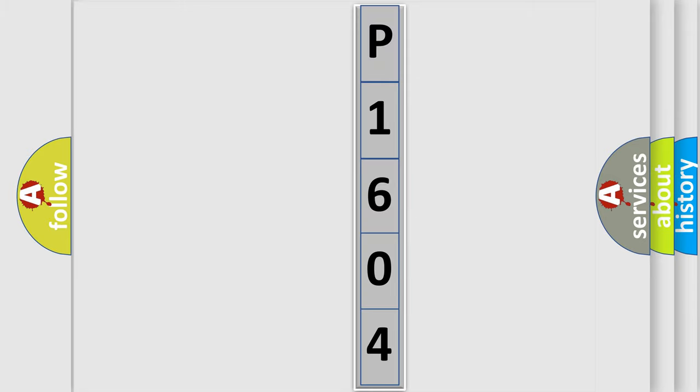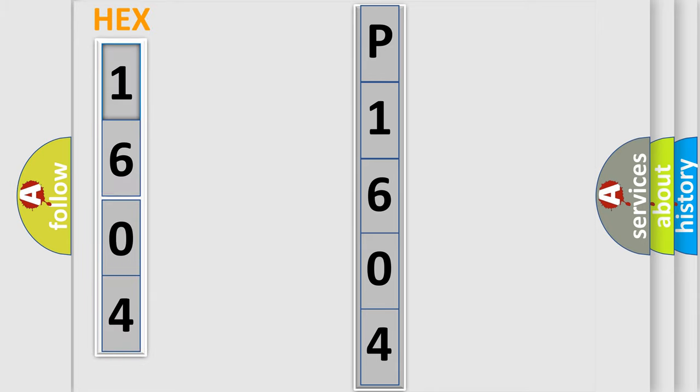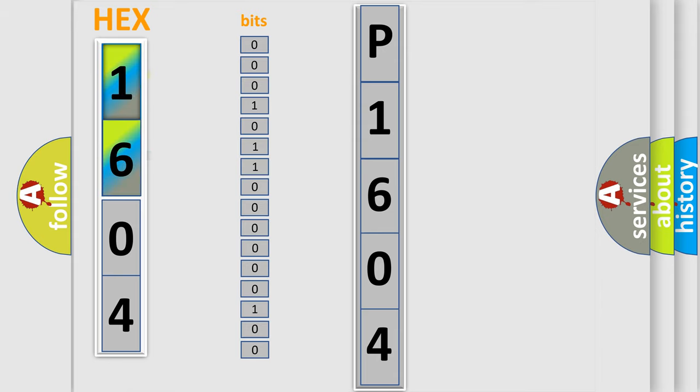You can move the video a bit further. The error code is split into two bytes consisting of 16 bits. One bit is the basic unit that each computer works with.